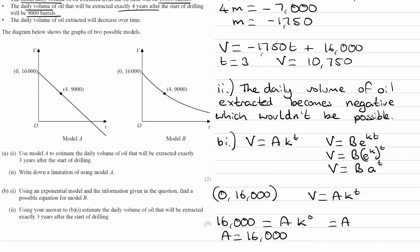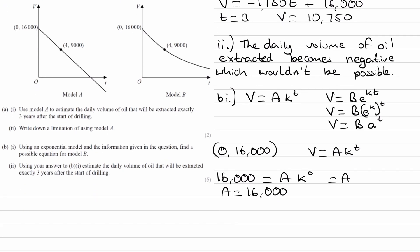Now to work out k, we've got a, so we can put that into our equation as well as the coordinate (4, 9000) and then rearrange for the unknown k. So V equals 9,000, which equals a, which is 16,000, times k to the power of 4.